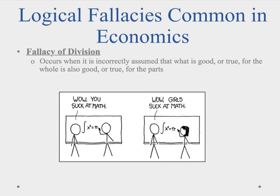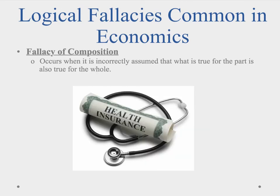The opposite may also occur in the fallacy of composition, which occurs when it is incorrectly assumed that what is true for the parts is also true for the whole. A general example is concluding that because a specific group in the economy benefits from a government policy, the entire economy benefits as well. If government decides to establish a national health care program, all of society will be called upon to help fund the program. Some groups may be better off as a result of nationalized health care, but some groups may be worse off, and the economy as a whole will not necessarily be better off. It should not be assumed that just because some groups will be better off that all groups will be better off — that is the fallacy of composition.